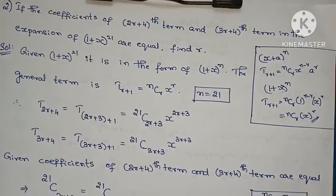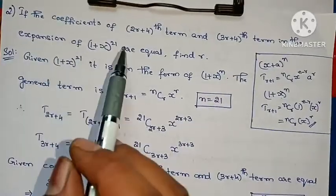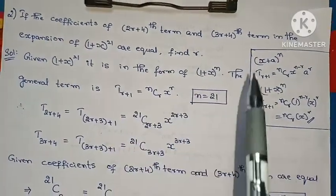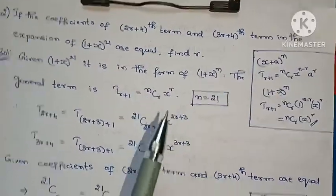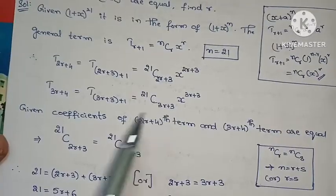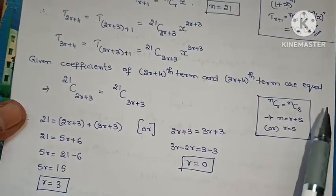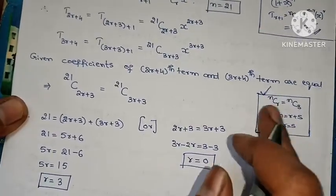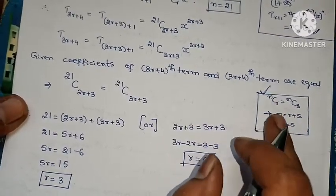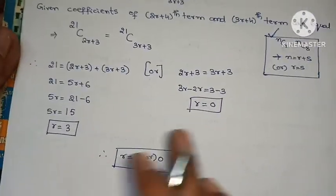This problem is complete. It's an easy problem — step by step. For (1 + x)^n with n = 21, the coefficients are equal: 21C(2r+3) = 21C(3r+3). Using the nCr = nCs law from permutations and combinations, we get two cases: n = r + s, and r = s, giving the two r values.